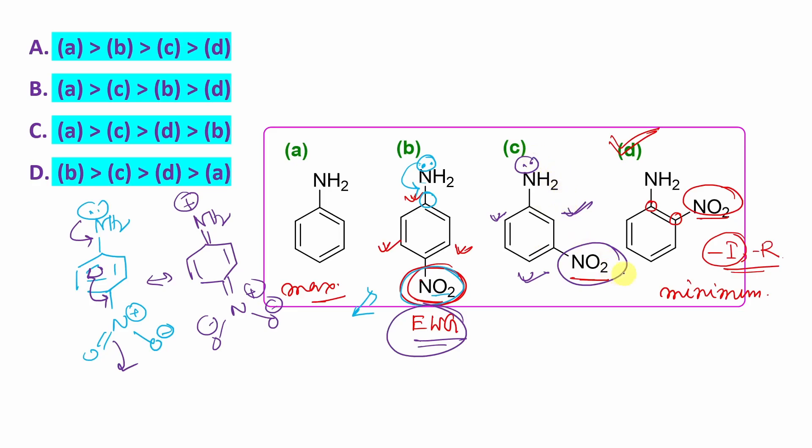So you can say minimum, maximum we got. So next minimum, if you say this is the maximum A, then A greater than, obviously the next option will come C. So A, C, then it will be B and then D. So what is the order? So it is A, C, B, D. So option B.